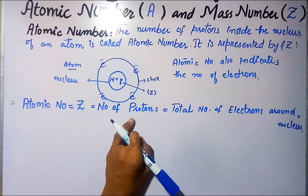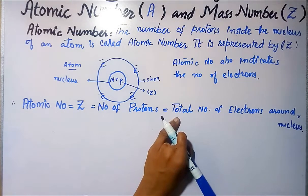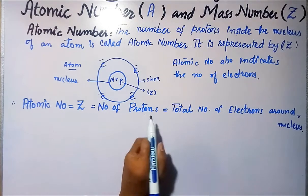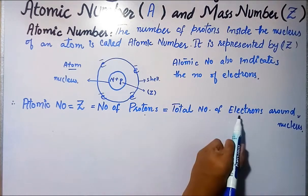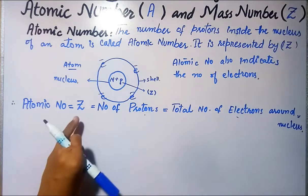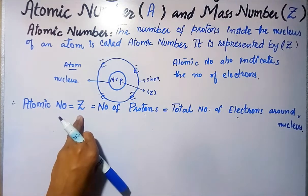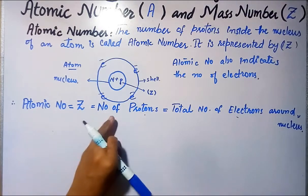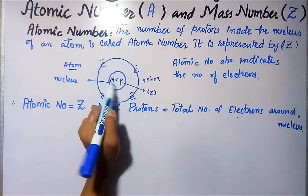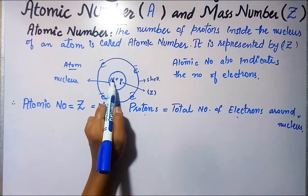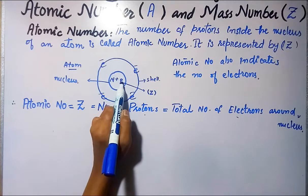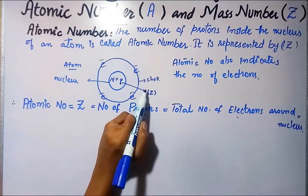In a neutral atom, the number of protons is equal to the number of electrons around the nucleus. So the number of protons gives us the number of electrons in the atom. Atomic number is represented by Z, and only protons have the atomic number.